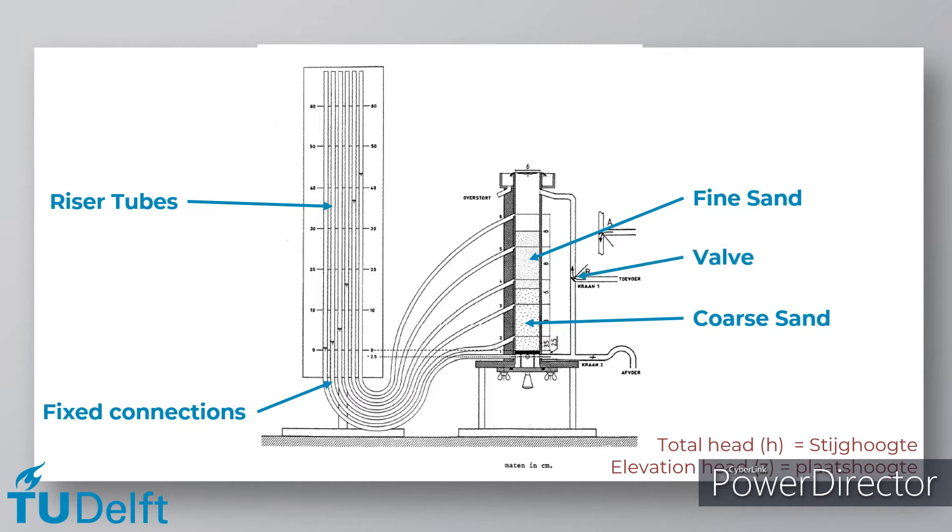A valve can be used to switch between downward flow or upward flow through the soil sample. A flow of water will be injected through the soil sample using a constant elevation head on top of the soil column. Note that to create a constant elevation head there should be a slight overflow at the top of the soil column.